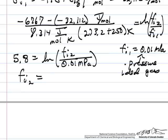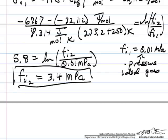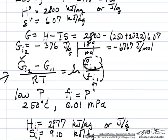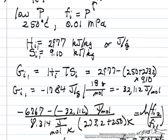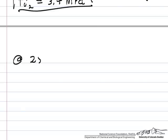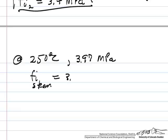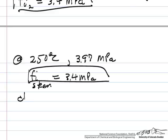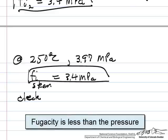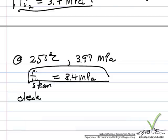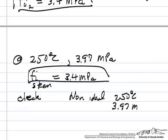The fugacity at the condition of interest is 3.4 megapascals. The saturation pressure from the steam tables at 250 degrees C is 3.97 megapascals, and the fugacity of steam is 3.4 megapascals. A reasonable check is that fugacity is less than the pressure, which is typically what we expect. It is a similar value, confirming that steam is non-ideal at 250 degrees C and 3.97 megapascals.